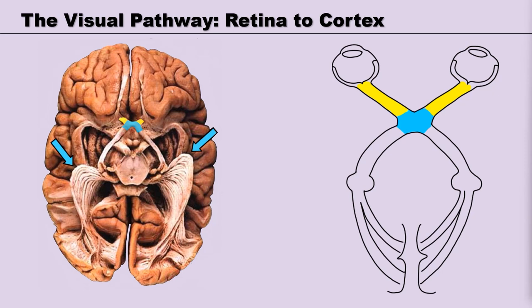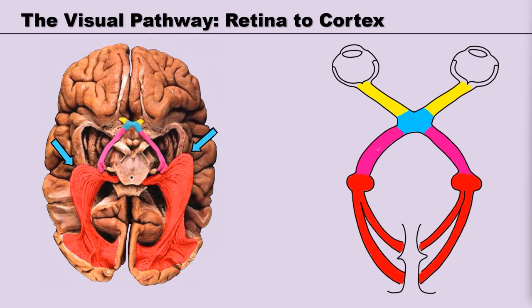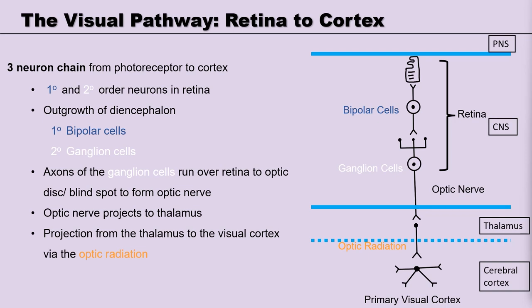After the optic chiasm, these nerves continue posteriorly as the optic tract. These second order neuron ganglion cells will then synapse onto a region of the thalamus called the lateral geniculate nucleus. The third order cells fan out as an optic radiation and project onto the primary visual cortex of the occipital lobe. As with some of the pathways we have looked at, the visual pathway is all made up of a three-neuron chain, beginning in the retina and ending in the visual cortex.